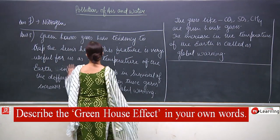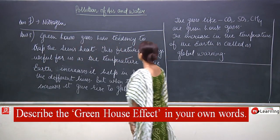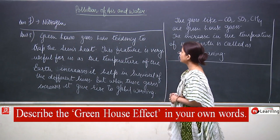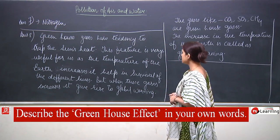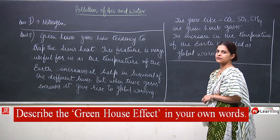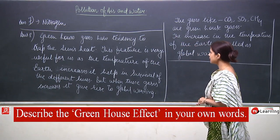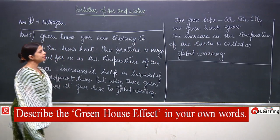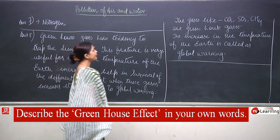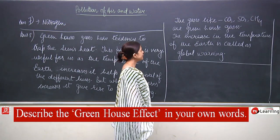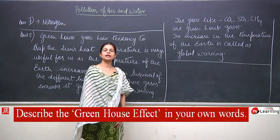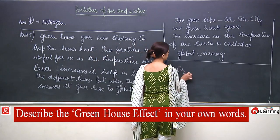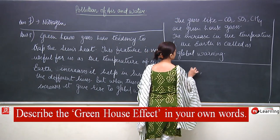Reading the answer: greenhouse gases have the tendency to trap the sun's heat. This feature is very useful for us as the temperature of the earth increases, helping in survival of different lives. But when these gases increase, they give rise to global warming. Carbon dioxide, sulphur dioxide, and methane are greenhouse gases.